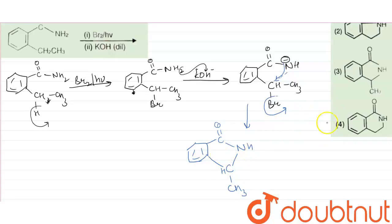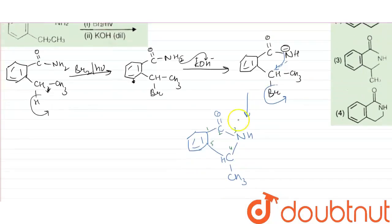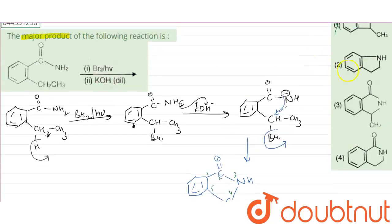Now we have to match this product with our options given. See, one thing you should know: how many membered ring structure is formed? This is six membered, this is one, two, three, four, and five. This is five membered and this is six membered. Now coming to our options, here they have given four membered ring, so this is wrong. Here they have given five membered ring, but you can see they are missing this methyl group. This methyl group is missing, so this one is also wrong.